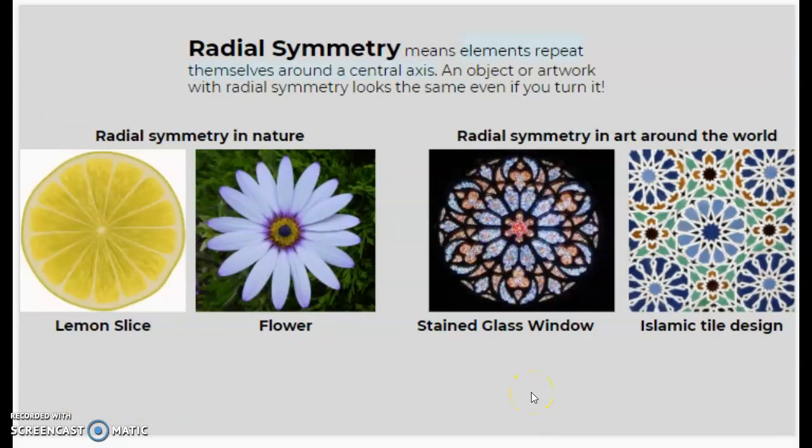Now we're into radial symmetry. So this means that elements repeat themselves around a central axis. A lot of the time radial symmetry designs will be round, but not always. Like this Islamic tile design is actually square, but it's still considered radial symmetry.